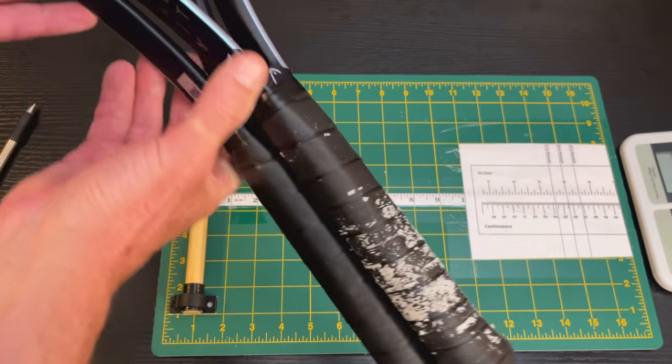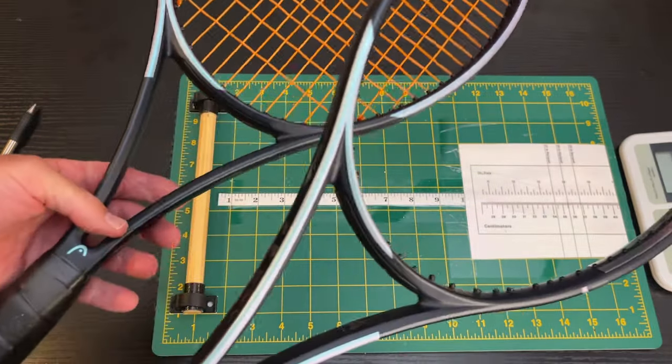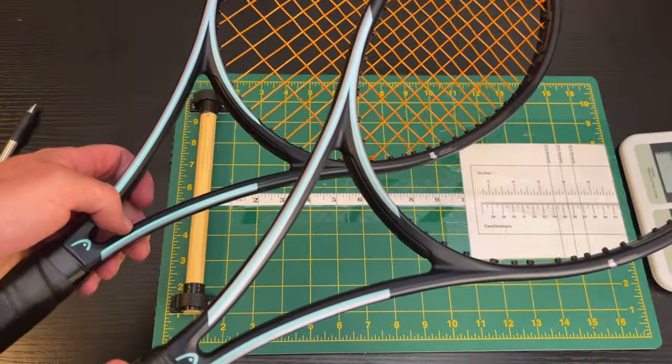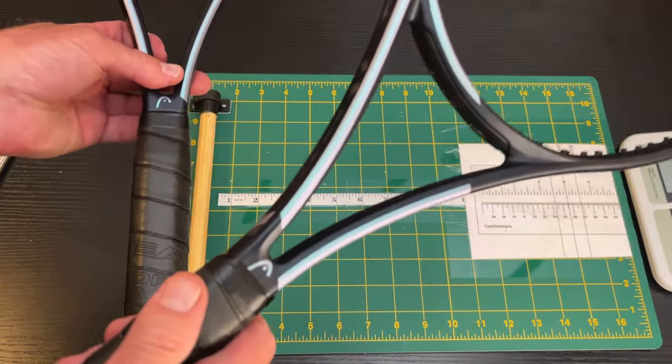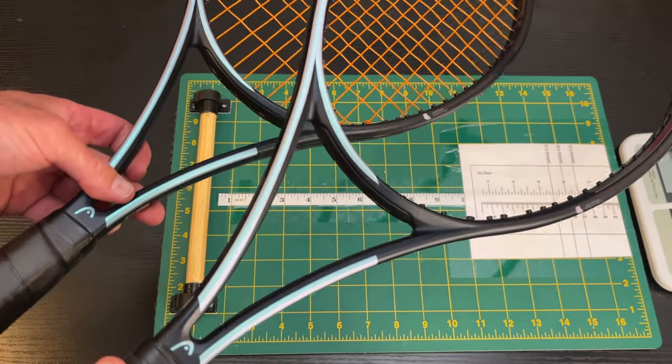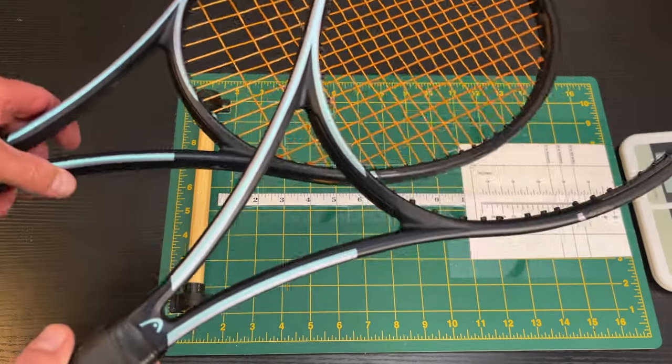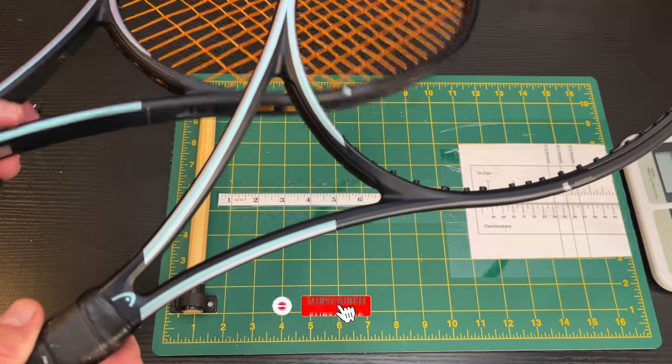And otherwise, there's no material difference between both these rackets. It's a Gravity MP. They've just extended it in the handle. And again, I'll show you how. And by the way, if you like this video, before I forget, please like, comment, and subscribe.